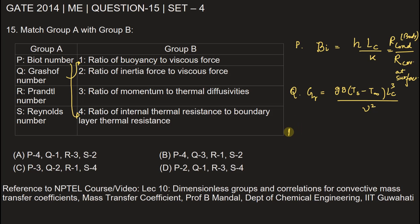Now the third one, Prandtl number, is defined as the ratio of molecular diffusivity of momentum to molecular diffusivity of heat. It is given by mu Cp by K, where K is the thermal conductivity and Cp is the heat capacity. It is used in convection mode of heat transfer. We can match Prandtl number with ratio of momentum to thermal diffusivity, so R with 3.